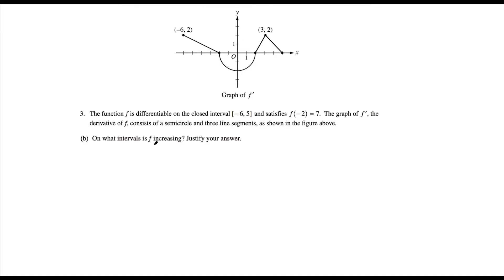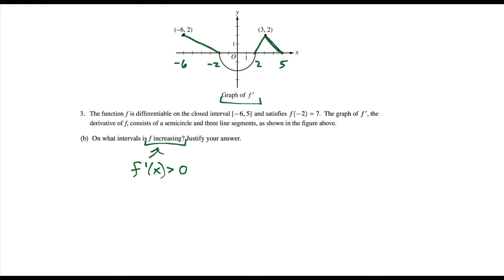For part B, we want to find the intervals where f is increasing. Anytime f is increasing, my immediate reaction is to look for where f'(x) > 0. We have a graph of f', so we need to find where the graph is above the x-axis. That means we're looking at the section from -6 to -2, and then from 2 out to 5. Be careful: at the endpoint -6, the derivative is positive, not zero, so we include it. But at -2, 2, and 5 the derivative is zero, so we exclude those endpoints. Therefore, f is increasing on those intervals because f' is greater than 0 on those intervals.